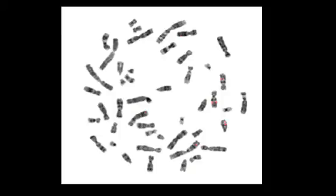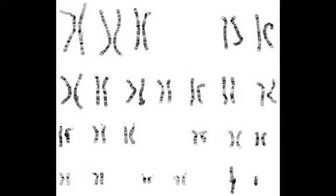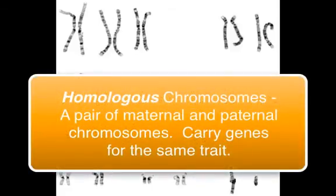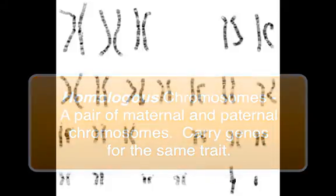A technique that involves taking a picture of a single cell in the process of mitosis allows us to examine each chromosome individually. Here's an actual picture of the 46 human chromosomes. Each chromosome has another that's very similar to it — in fact, they're like a pair of shoes. When these pairs are put together, we can create a chart. These pairs not only look alike, but they carry genes for the same traits. One of the pair came from your father and the other from your mother — they are called your maternal and paternal sets. We use the term homologous to describe each one of the pairs; homologous means they are similar and carry the same genes for a particular trait.